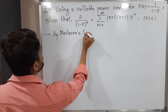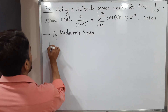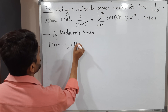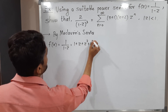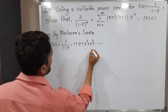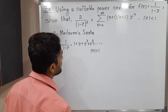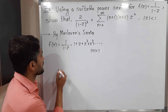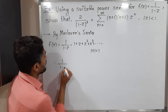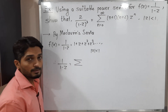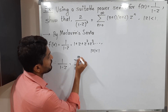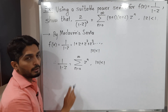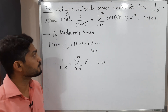The Maclaurin series — it's a very standard function and we are familiar with its expansion: 1/(1-z) = 1 + z + z² + z³ + ... and so on, and it is true for |z| < 1. We can write the same thing as a summation: 1/(1-z) = Σ(n=0 to ∞) zⁿ, with the same condition |z| < 1.